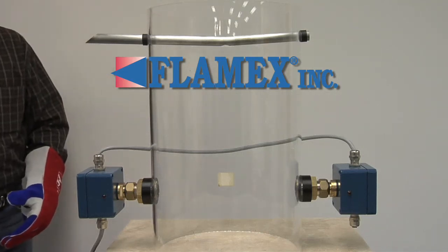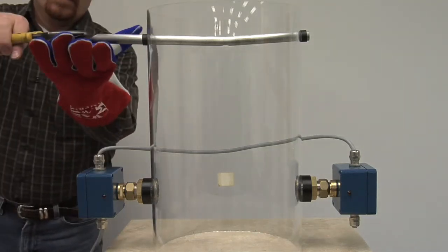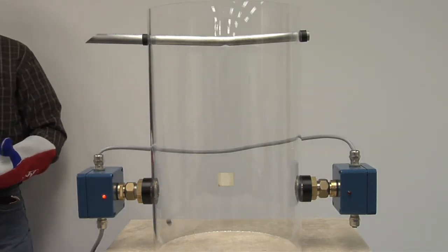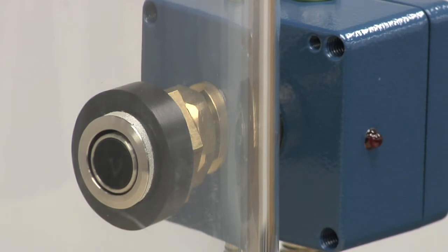FlameX offers an infrared detector that is capable of detecting hot particles being transported within a material stream. The detector features a low profile so that it does not protrude into the material flow, making it ideal for installation on ductwork and drop chutes.